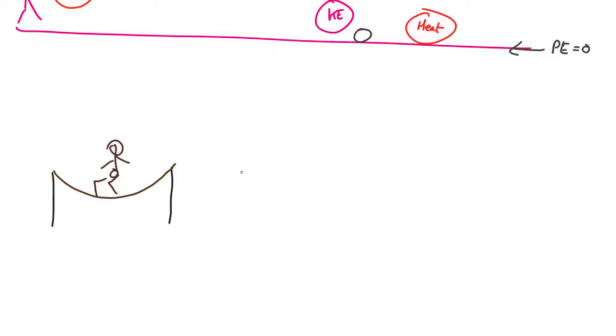Then, a bit later, the trampoline is straightened out and our person is flying through the air. They get to the top of their arc. And they come back down again. They hit the trampoline and they push it down.